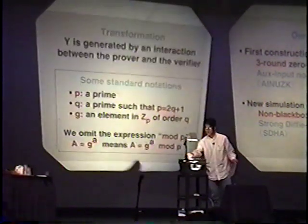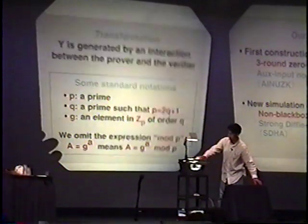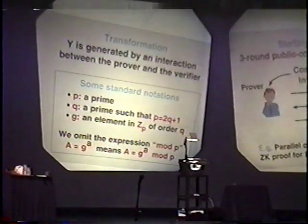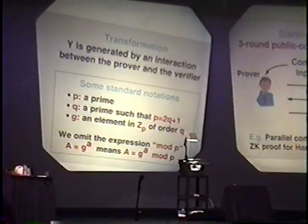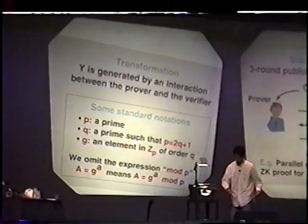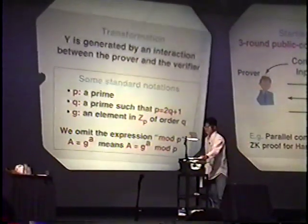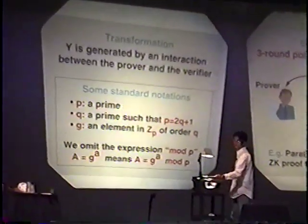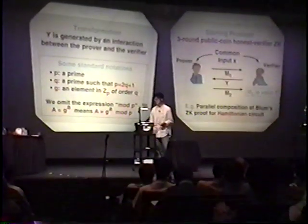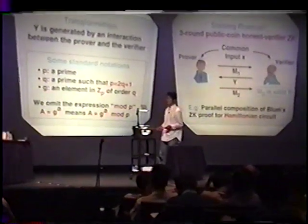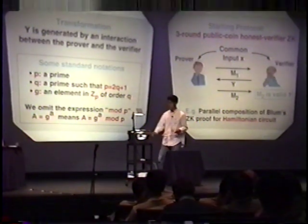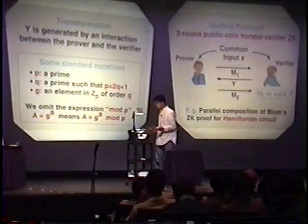And I want to transform this protocol into another three-round protocol which satisfies the zero-knowledge property against any cheating verifier. Our approach is simple: we replace the verifier's public coin Y by an interaction between the prover and the verifier. And we use some standard notation related to the discrete logarithm problem. Q is a prime such that Q equals 2 times P plus 1, and G is an element of order P. And for simplicity, we only consider the special case.